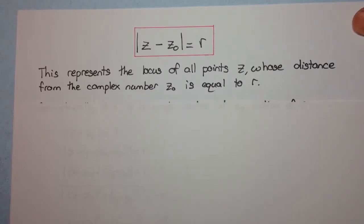So geometrically, this is a circle, center at z₀, and has a radius of r.